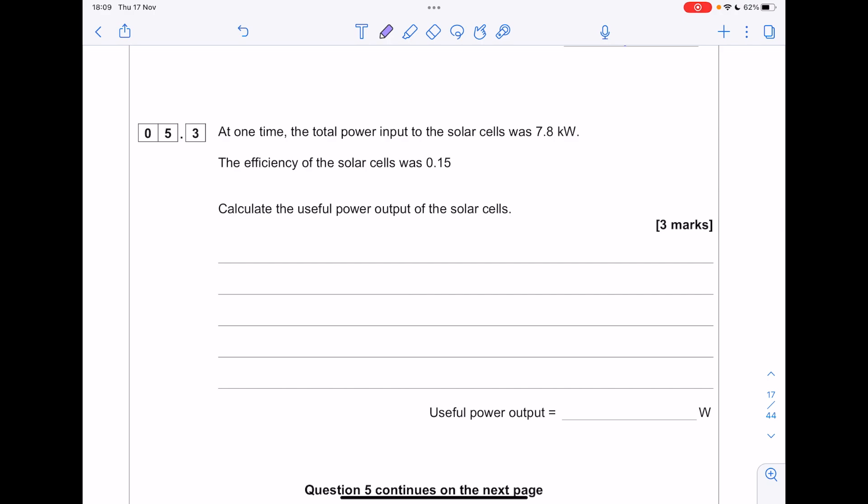At one time, the total power input was 7.8 kilowatts. The efficiency was 0.15. Calculate the useful power output. Be careful with this unit. Let's get it into watts by timesing by 1,000. So our equation here is useful energy out over total energy in equals efficiency. Substituting our values.